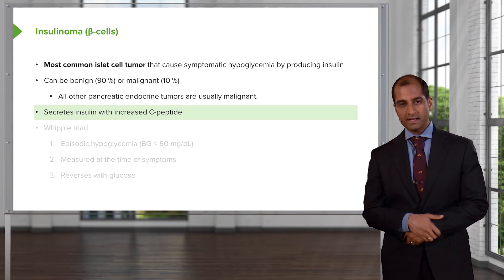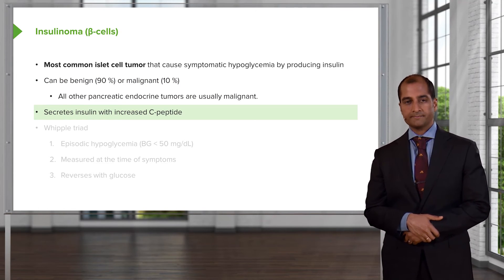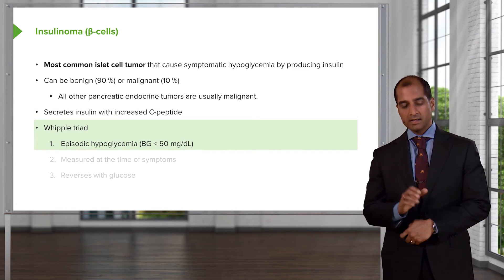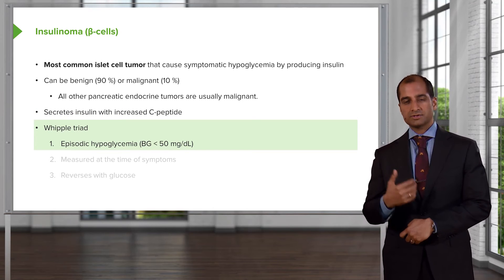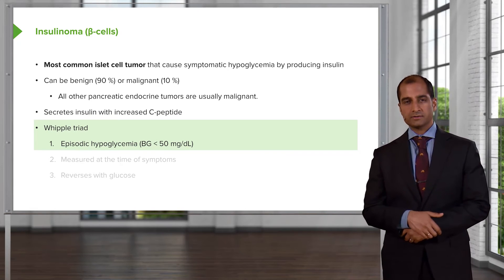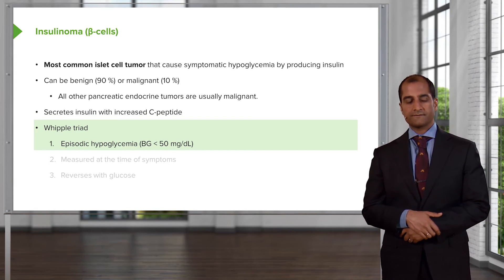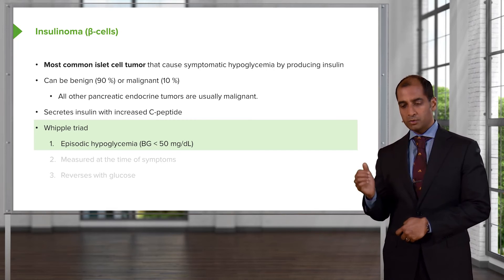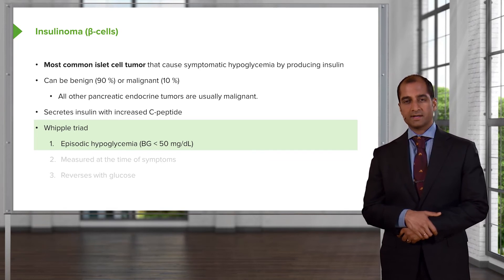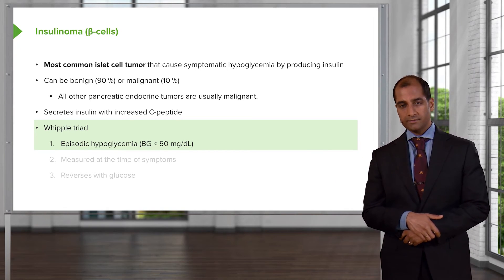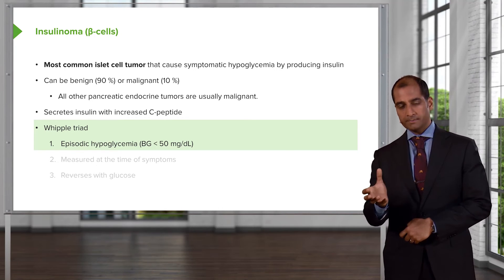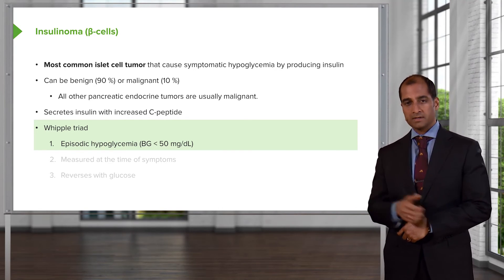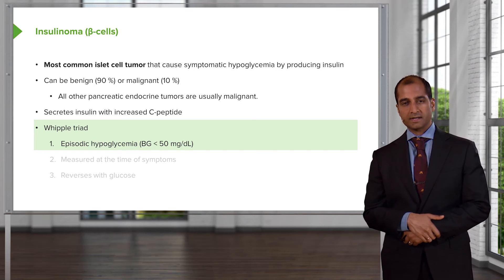With all this insulin coming out endogenously, along with C-peptide, you have the Whipple Triad. Use common sense: with all this insulin, you can expect hypoglycemia. Blood glucose levels, normally approximately 100, can drop all the way down to 50 milligrams per deciliter, measured at the time of symptoms.